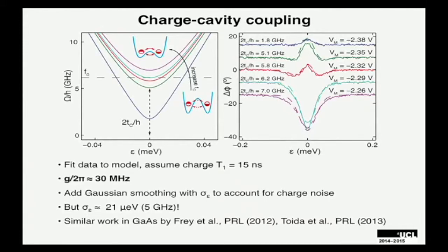If we look at the phase response along the single charge transition as we vary the inter-dot tunnel coupling, we see a change in the sign of the phase response as we tune the tunnel coupling energy through the cavity frequency. Going back to the Jaynes-Cummings Hamiltonian, we can develop a model and by fitting these datasets extract the parameters for our cavity-coupled double quantum dot charge qubit. In this device we measure a charge-cavity coupling rate on the order of 30 MHz. Unfortunately, these double quantum dot charge qubits have very short coherence times as they're strongly affected by low-frequency charge noise, which prevents us from accessing the strong coupling regime.